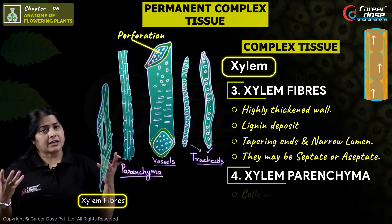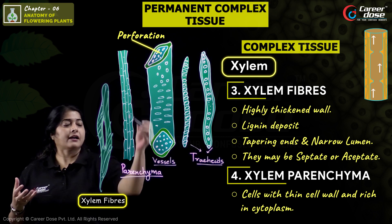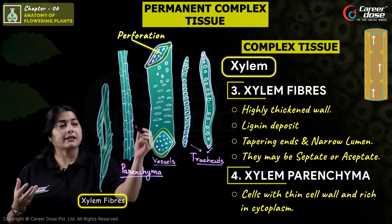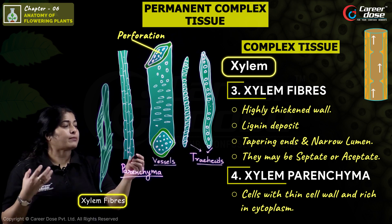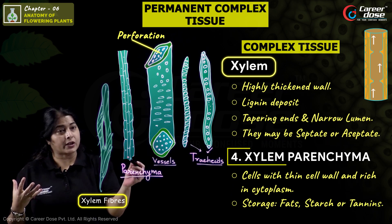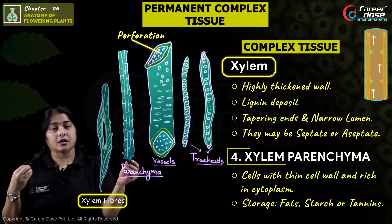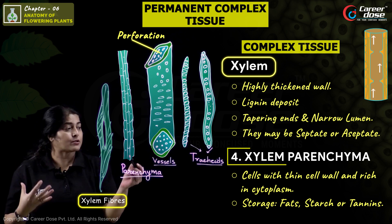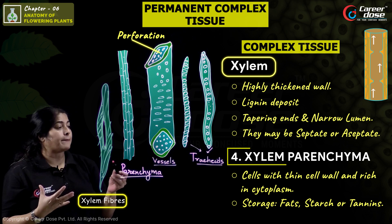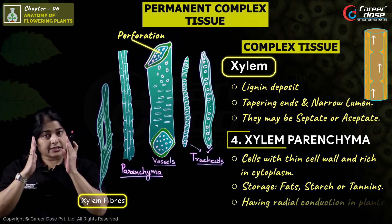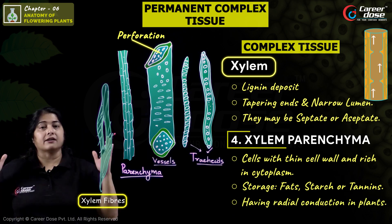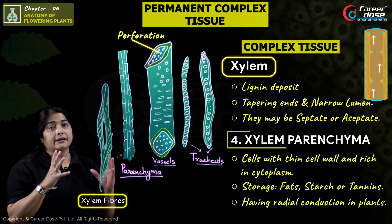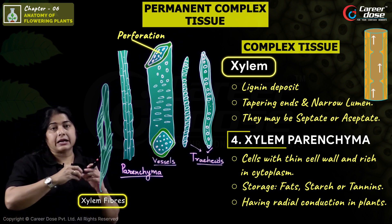The fourth component is Xylem Parenchyma — normal parenchyma cells associated with xylem tissue. These are thin-walled cells rich in cytoplasm. Their function is storage — they store fats, starch, and other substances like tannins. They also assist in the lateral radial conduction of water through the parenchyma.